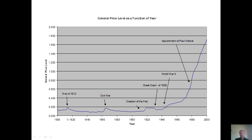The history of this graph is strongly related to the history of central banking. Under President Washington, the first President of the United States, there was a debate between Alexander Hamilton and Thomas Jefferson on whether or not the United States should have a central bank. Hamilton had previously worked for Washington, who supported him, and a central bank was created over the opposition of Thomas Jefferson.